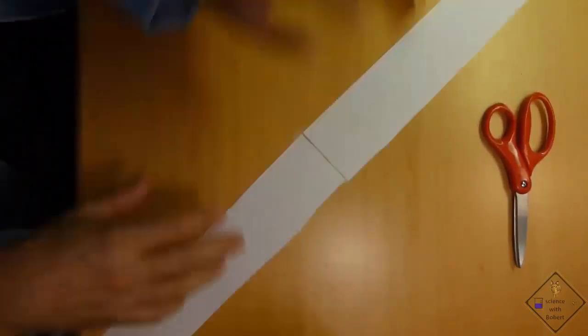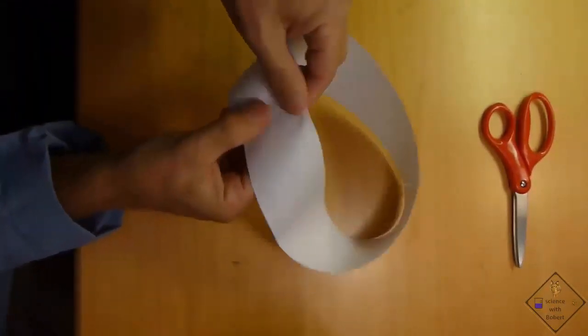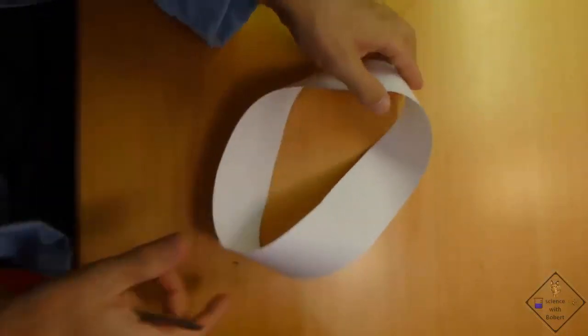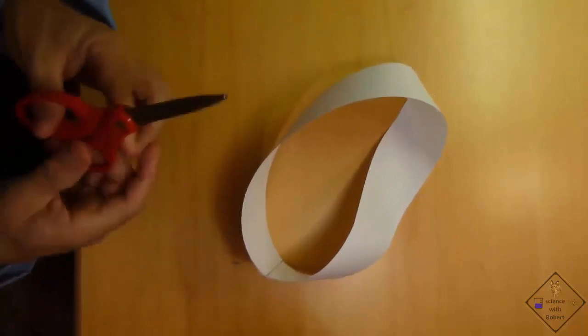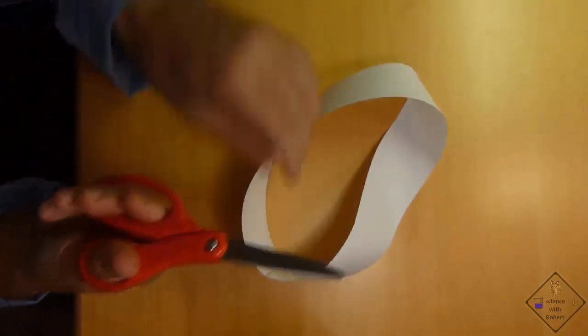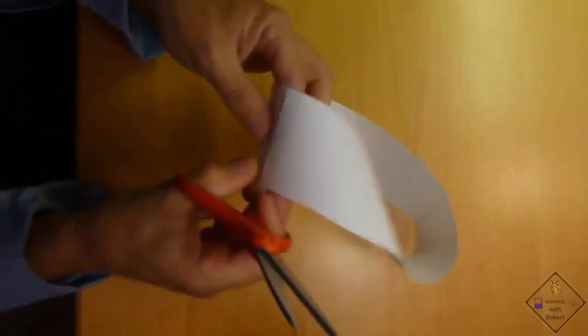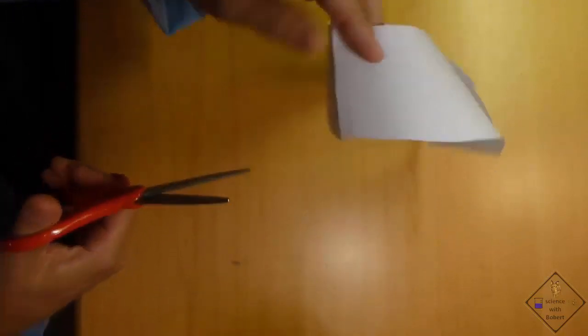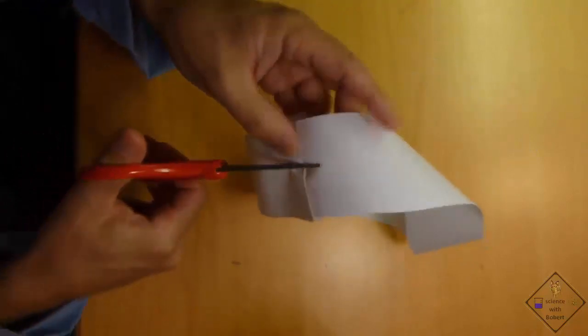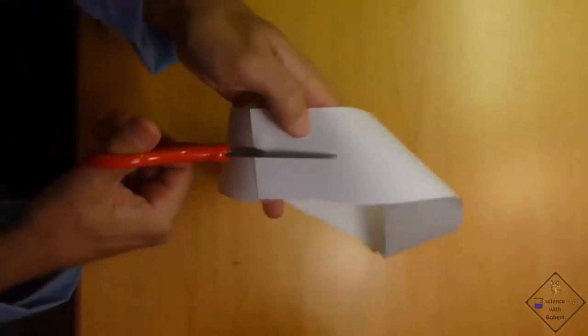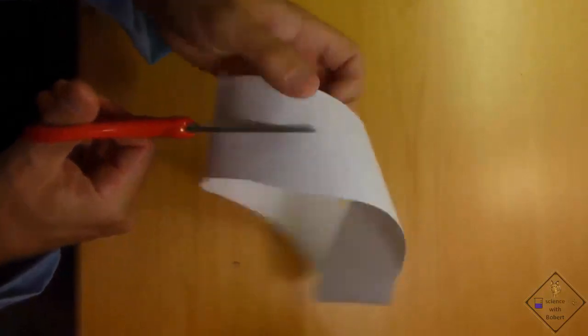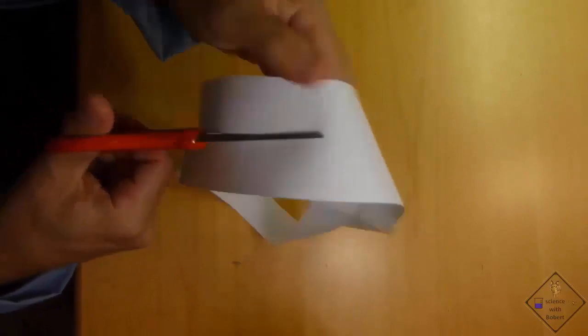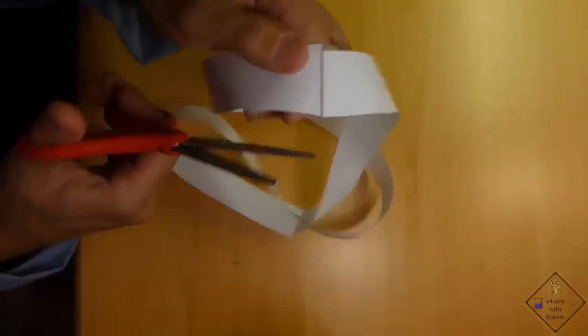Let's make another Mobius strip so we can try something else. This time, let's use a scissors and cut right down the middle of our Mobius strip. What do you think will happen? We end up with one big Mobius strip.